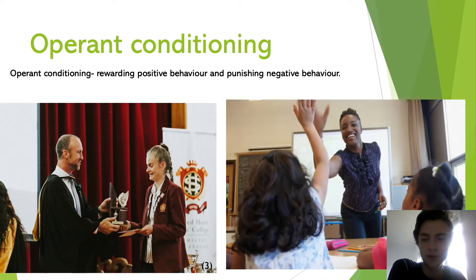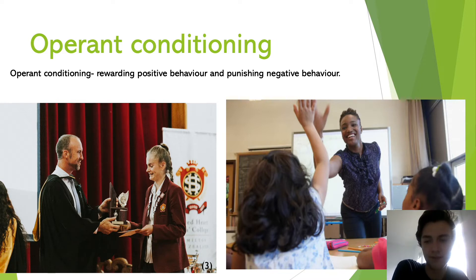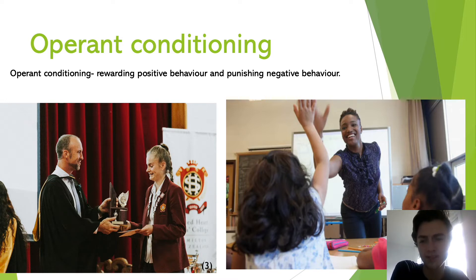Operant conditioning can look like positive behaviour being rewarded and negative behaviour being punished. For example, on the left there is prize giving, where great results can be rewarded. It can also look like a teacher offering praise or positive affirmations for good work from students. Negative behaviour can look like students being moved away from each other or given extra work to do.